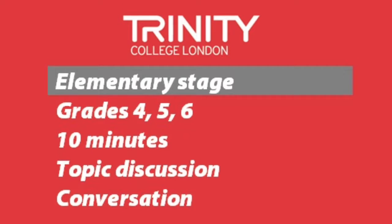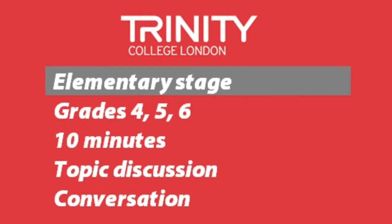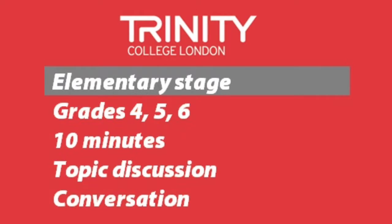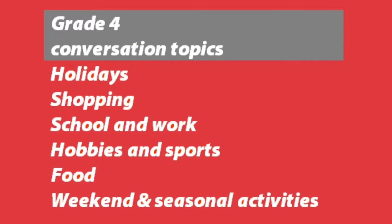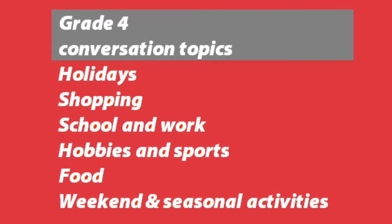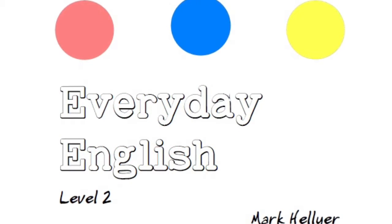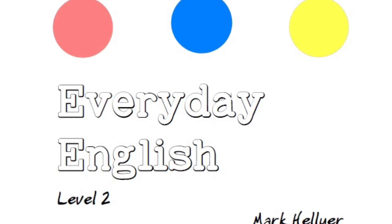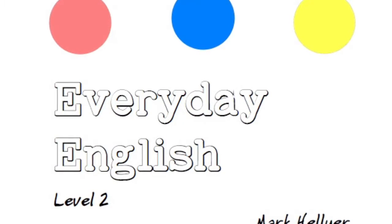The first is to discuss a topic selected and prepared by the student, and the second is to have a brief conversation around two topics selected at random by the examiner from a list which corresponds to the unit topics in Everyday English. So, for example, the topics on the list at grade 4 are holidays, shopping, school and work, hobbies and sports, food, and weekend and seasonal activities. These are the topics for units 7 to 12 in Everyday English level 2, so if a student has been using that book, they should be able to hold a short conversation on two of those topics.